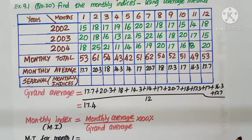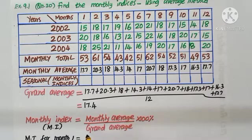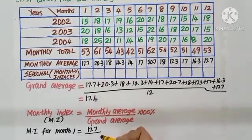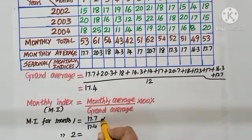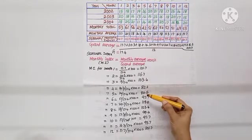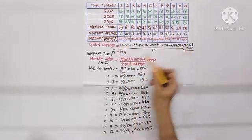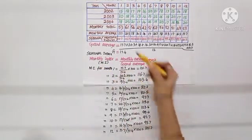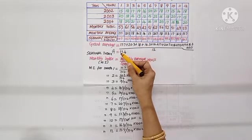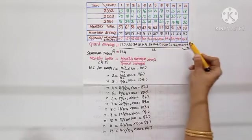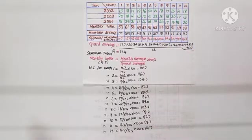Now, what is monthly index formula? Monthly average by grand average into 100. What is monthly average? Grand average 17.7 divided by grand average 17.4 into 100. Simplify and write the answer. As we calculate the seasonal indices for every month, let us tabulate here. So, each month we have calculated the monthly average divided by grand average into 100. And we have tabulated and that is the way to calculate seasonal indices using simple average method.